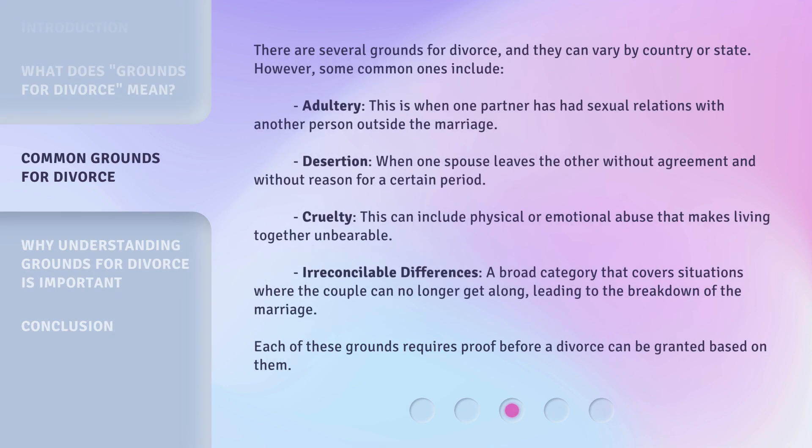There are several grounds for divorce, and they can vary by country or state. However, some common ones include: Adultery — when one partner has had sexual relations with another person outside the marriage. Desertion — when one spouse leaves the other without agreement and without reason for a certain period. Cruelty — which can include physical or emotional abuse that makes living together unbearable. Irreconcilable differences — a broad category covering situations where the couple can no longer get along, leading to the breakdown of the marriage. Each of these grounds requires proof before a divorce can be granted based on them.